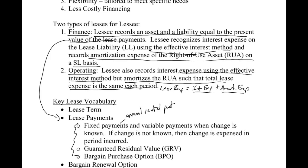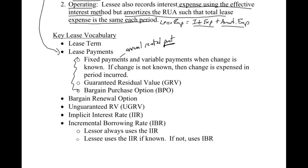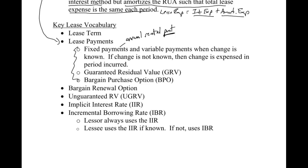All three bullet points — fixed payments, guaranteed residual value, and bargain purchase option — are all components of the lease payments. The annual rental payment is the PMT or annuity in your calculator. Residual value is basically what we expect the asset to be worth when the lease is over — similar to salvage value. A guaranteed residual value means it's guaranteed by the lessee; if we say the asset will be worth $10,000, the lessee guarantees that. A bargain purchase option is an option for the lessee to purchase the asset at the end of the lease at such a bargain that we assume they will exercise it. Both the guaranteed residual value and the bargain purchase option go in as your future value in the calculator.